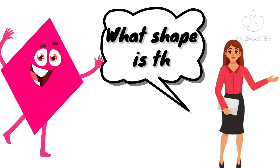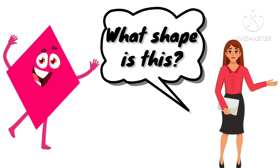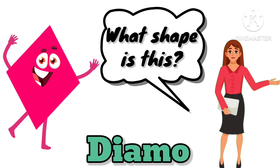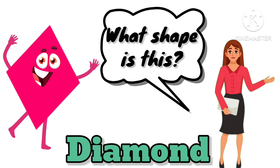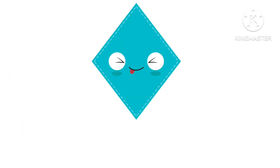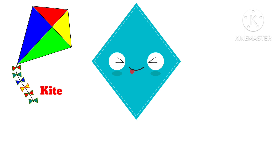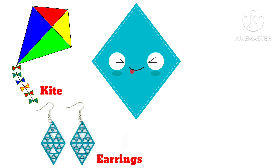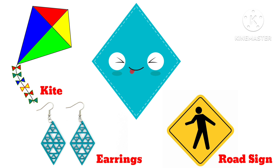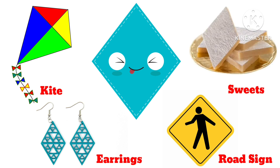What shape is this? This is a diamond. So kids, let's learn about the objects that are diamond in shape. Examples: kite, earrings, road sign, and sweets are all diamond in shape.